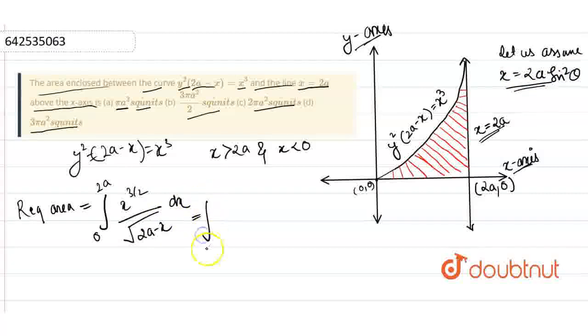By putting the value, we get the limit has been changed. With respect to this, 2a sin²θ is going to become (2a sin²θ)^(3/2) divided by √(2a cos θ) times 2a cos θ.